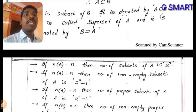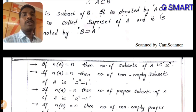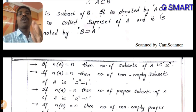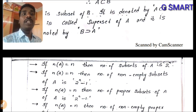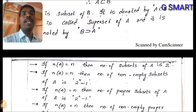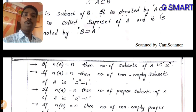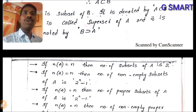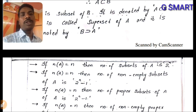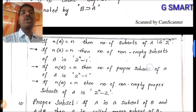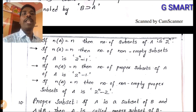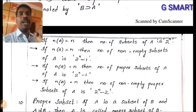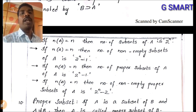Important formulas: if n(A) = n, then the number of non-empty subsets is 2^n − 1. The number of proper subsets of A is also 2^n − 1. The number of non-empty proper subsets of A is 2^n − 2, because we eliminate both A itself and the empty set. These four formulas are very important for the exam.